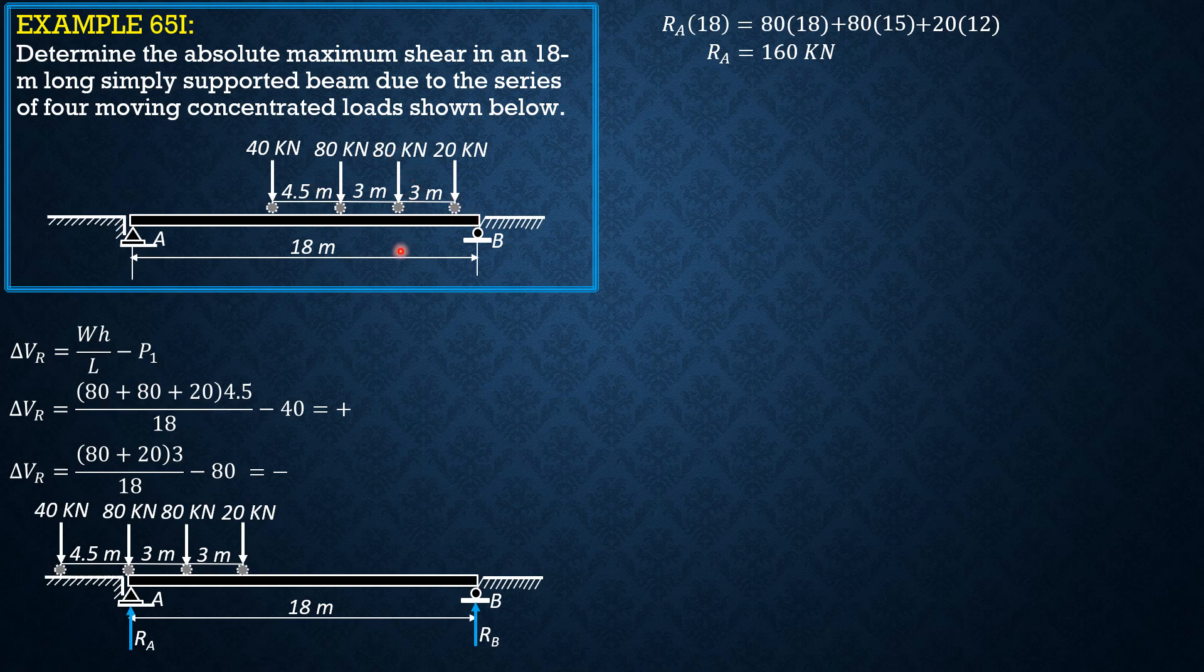so that this 80 kilonewton load will be over B and the 20 kilonewton load passes B, that will be on the ground. This will be our P₁, our h is 3, and our W, because all these loads will be on the span, is 80 plus 80 plus 40, or 200. So ΔVr is 80 plus 80 plus 40 times 3 over 18 minus 20. The sign is positive.